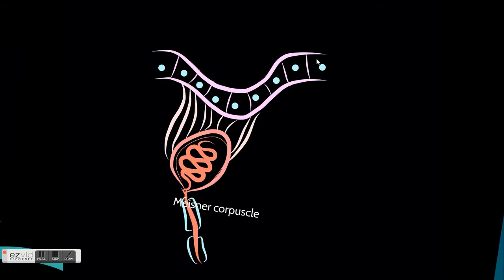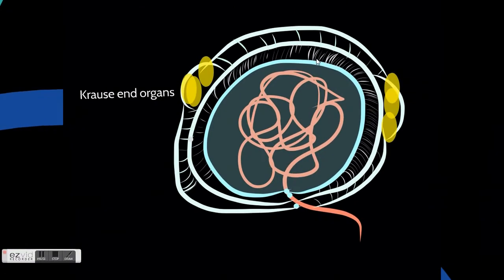We also have the Krause organs, composed of a laminated capsule surrounding rod-like or spiral nerve endings. They react to relatively low frequency vibration within a range of 10 to 100 Hertz.